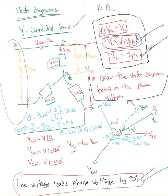Power equals square root of 3 times VL times IL times cos theta, or alternatively 3 times VPH times IPH times cos theta — since it's three-phase, it's three times phase voltage times phase current times power factor. Our goal here is to draw the vector diagram, which for a Y-connected load is always based on phase voltage.